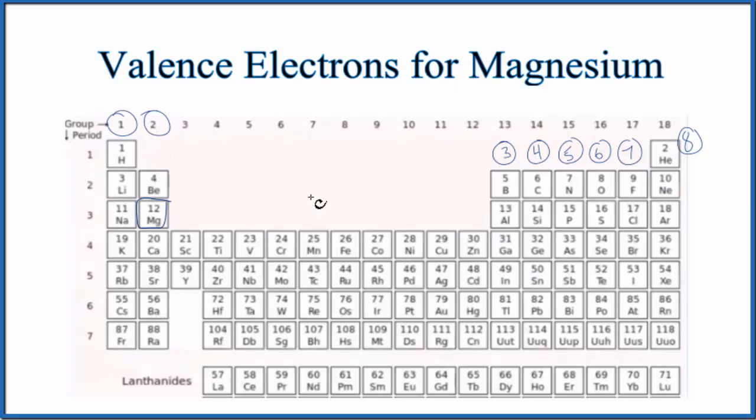The other way we can find the number of valence electrons for magnesium is to look at the electron configuration. So magnesium has an atomic number of 12. That means it has 12 protons. And since these are all neutral elements, the number of protons equal electrons. So we have 12 total electrons.